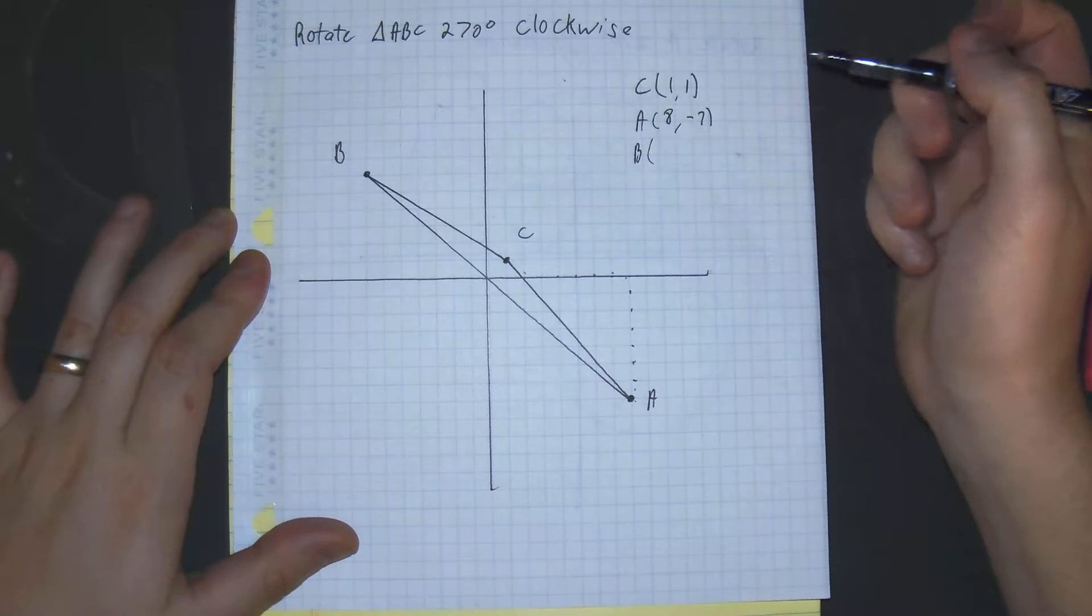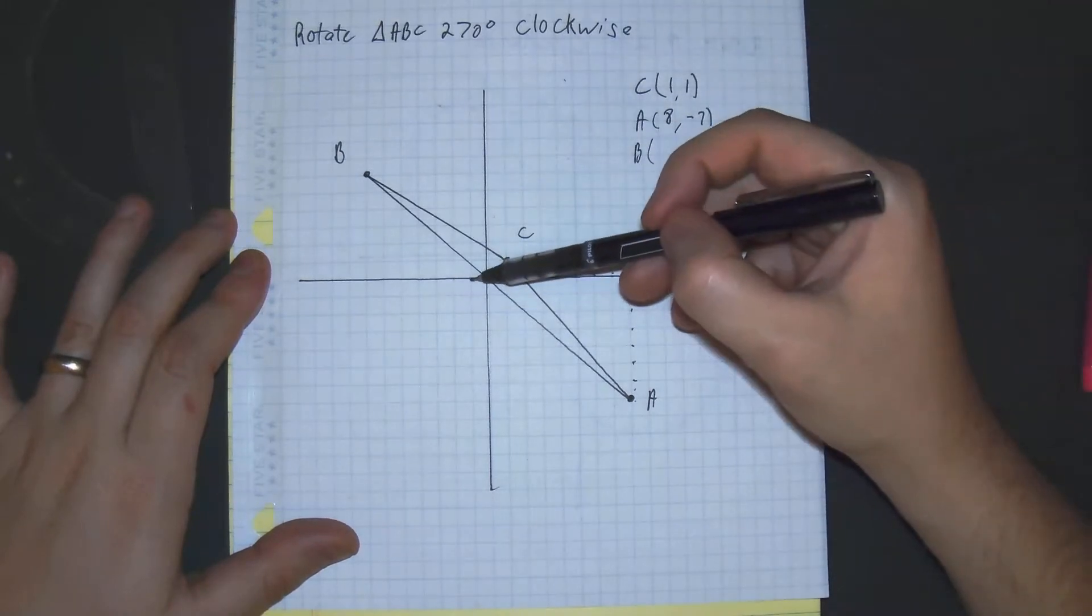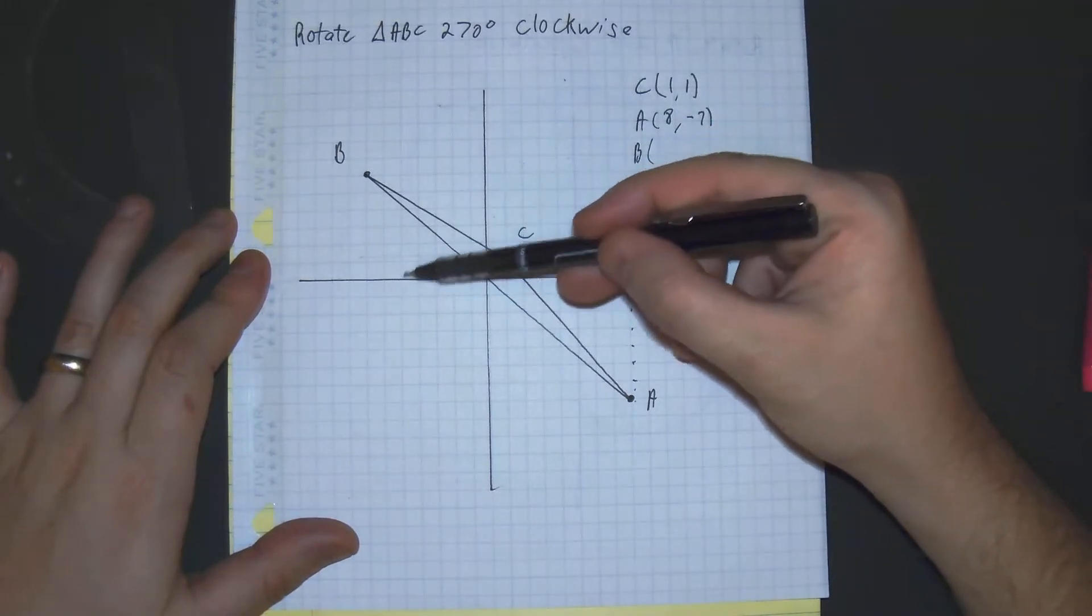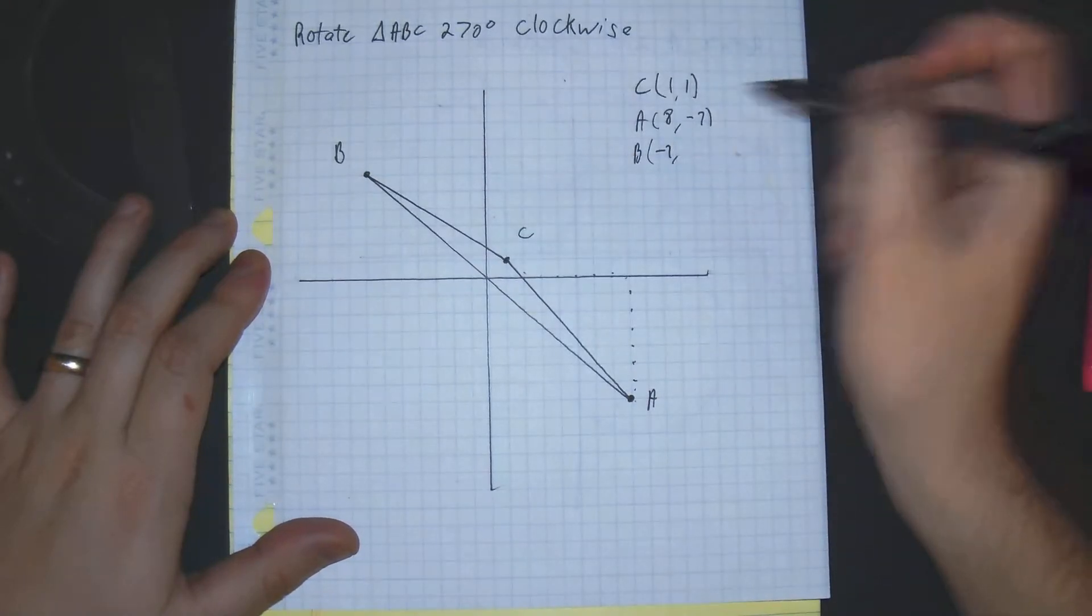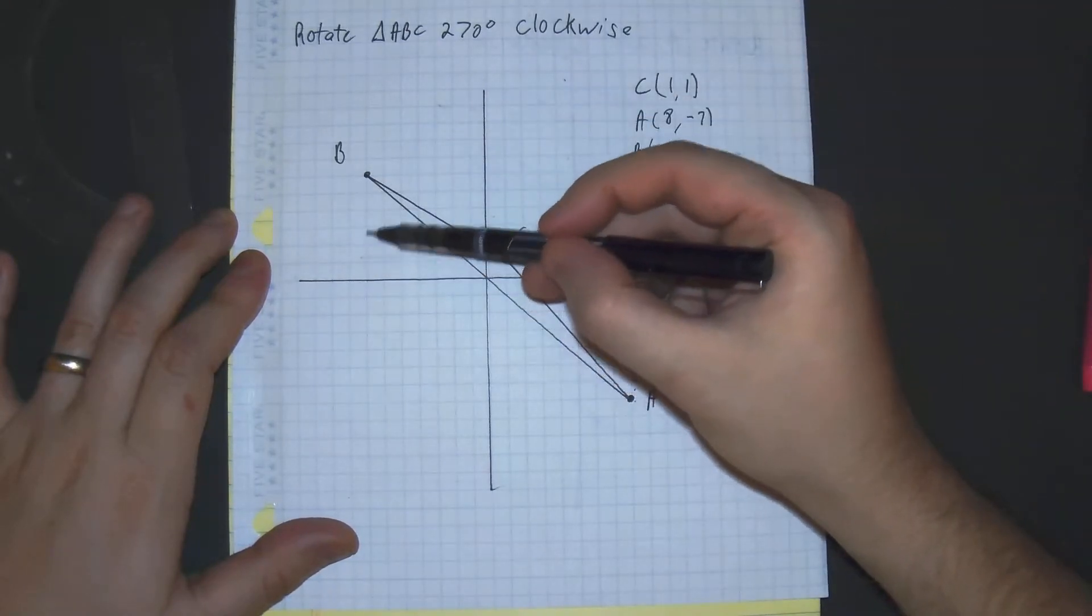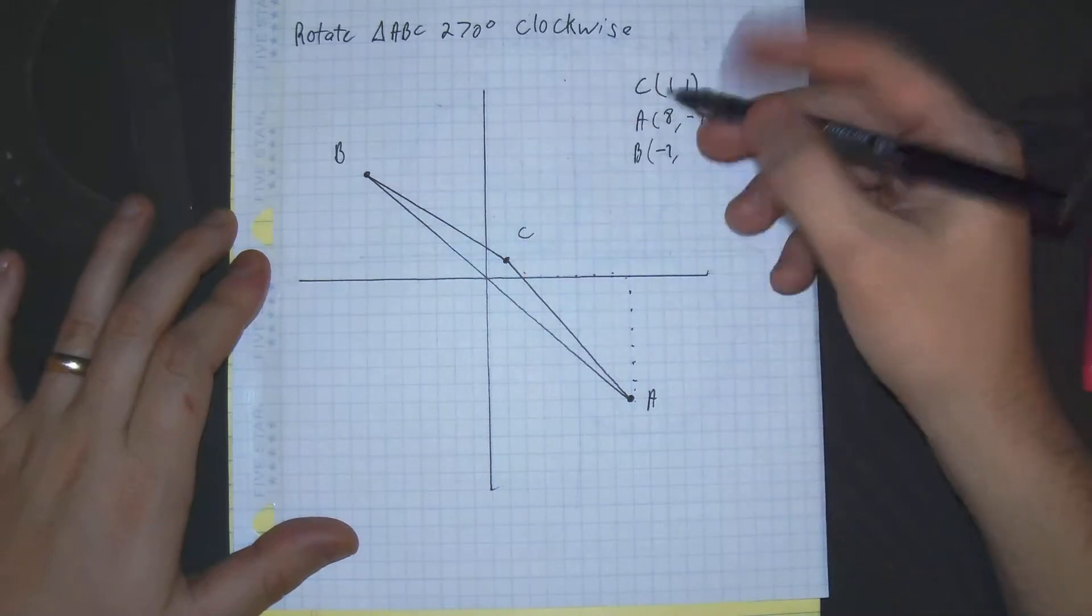Last, let's find the point of B. B is at 1, 2, 3, 4, 5, 6, 7, negative 7. And 1, 2, 3, 4, 5, 6, positive 6.